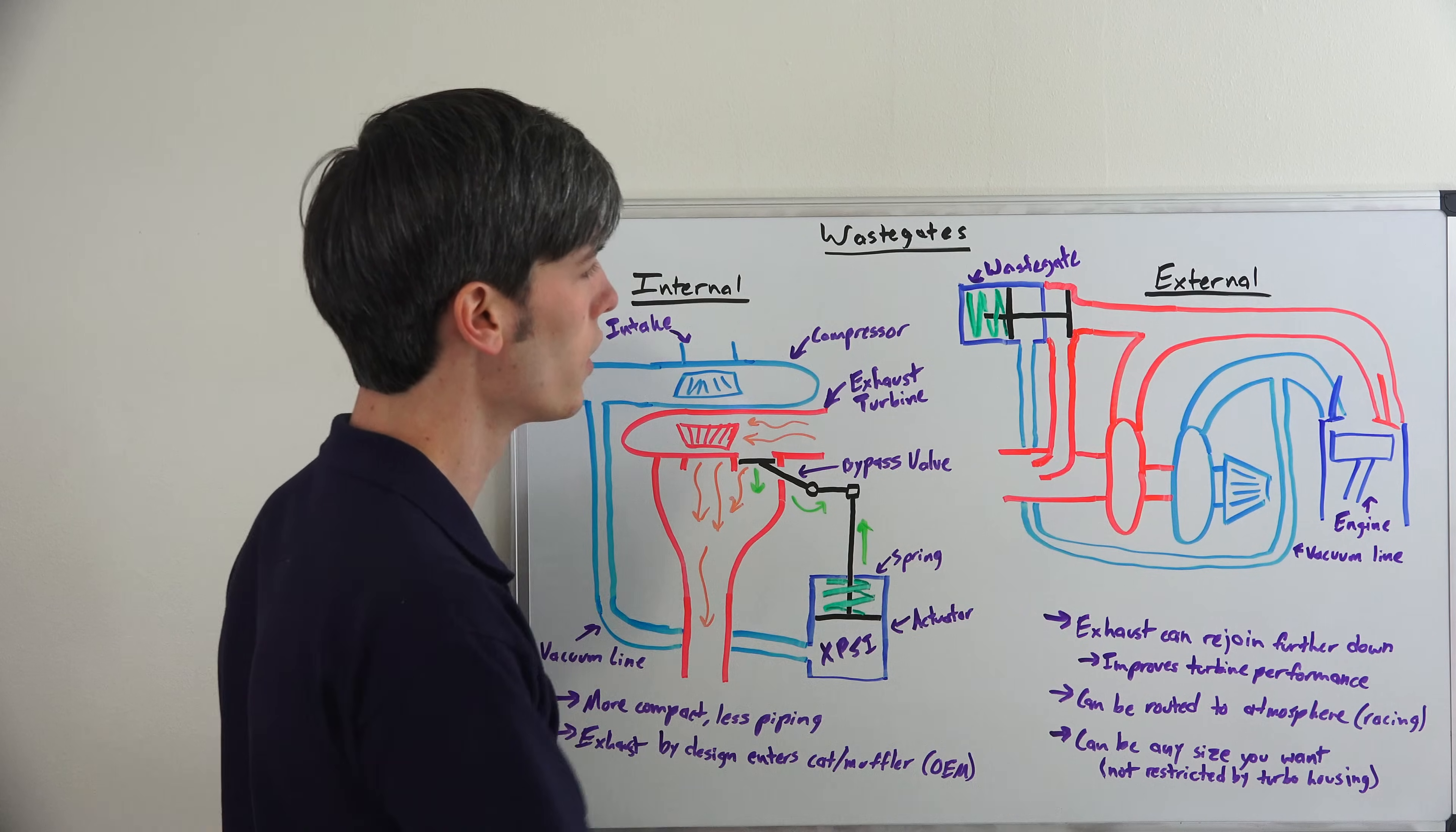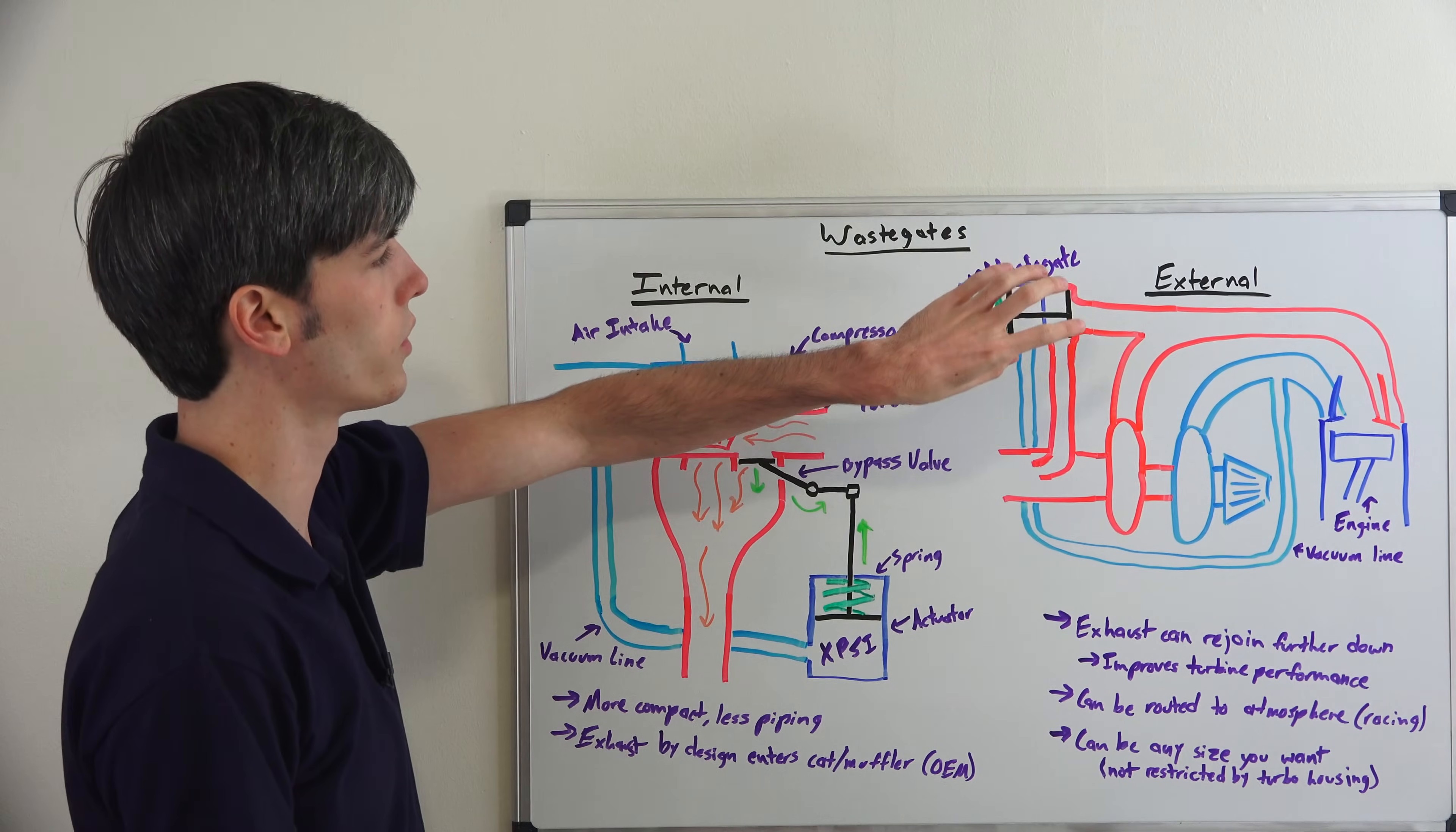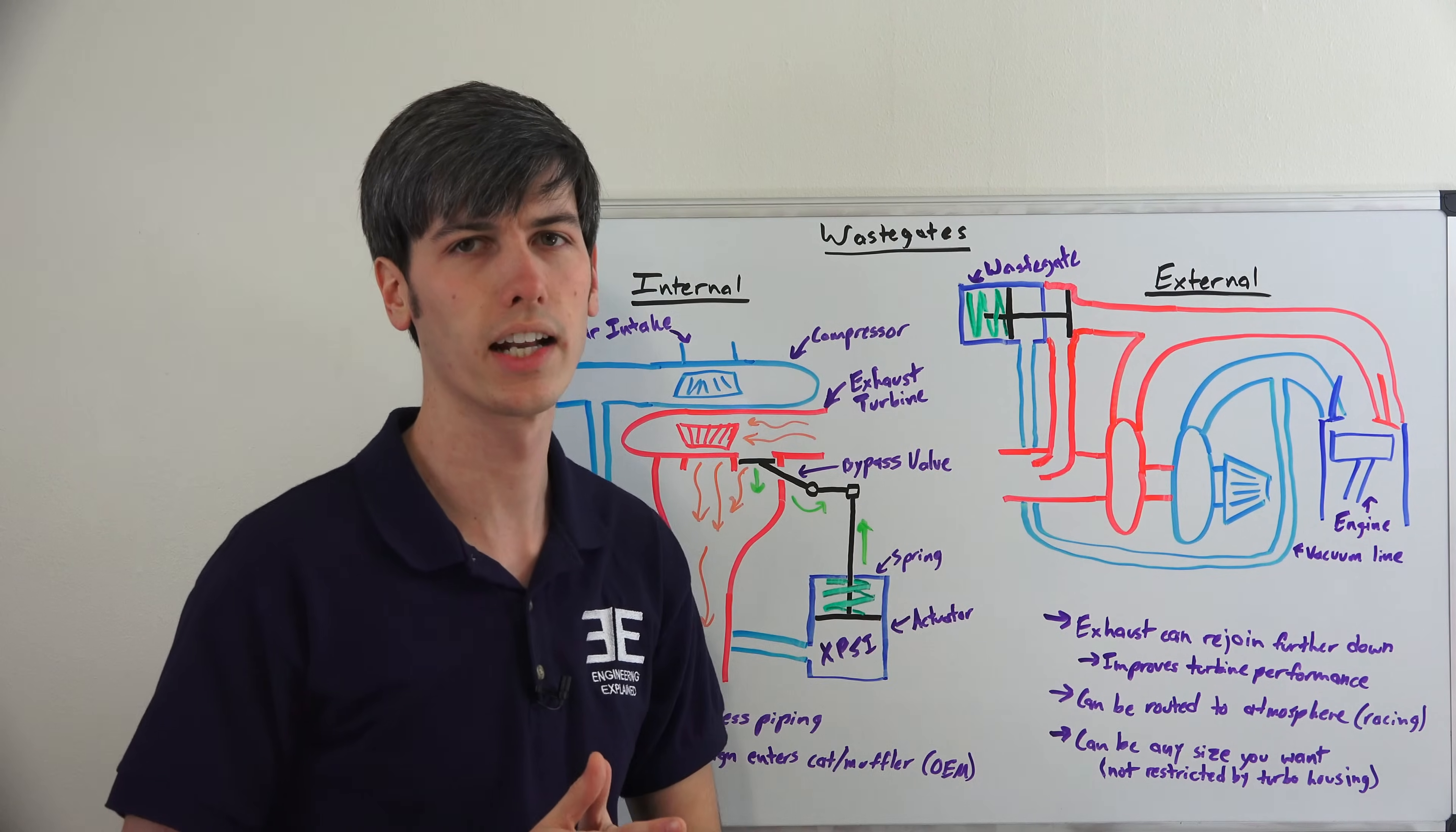So if you didn't want to route it into here, you don't have to, whereas in this case, it's always going to be routed into the exhaust. And here you could just have it vent directly to the atmosphere. Also, the benefit of doing a wastegate externally is that you can choose any size you want. You're not restricted by the size of the turbocharger housing. You can do any size you want and so that gives you a little bit more free play in the design of it.